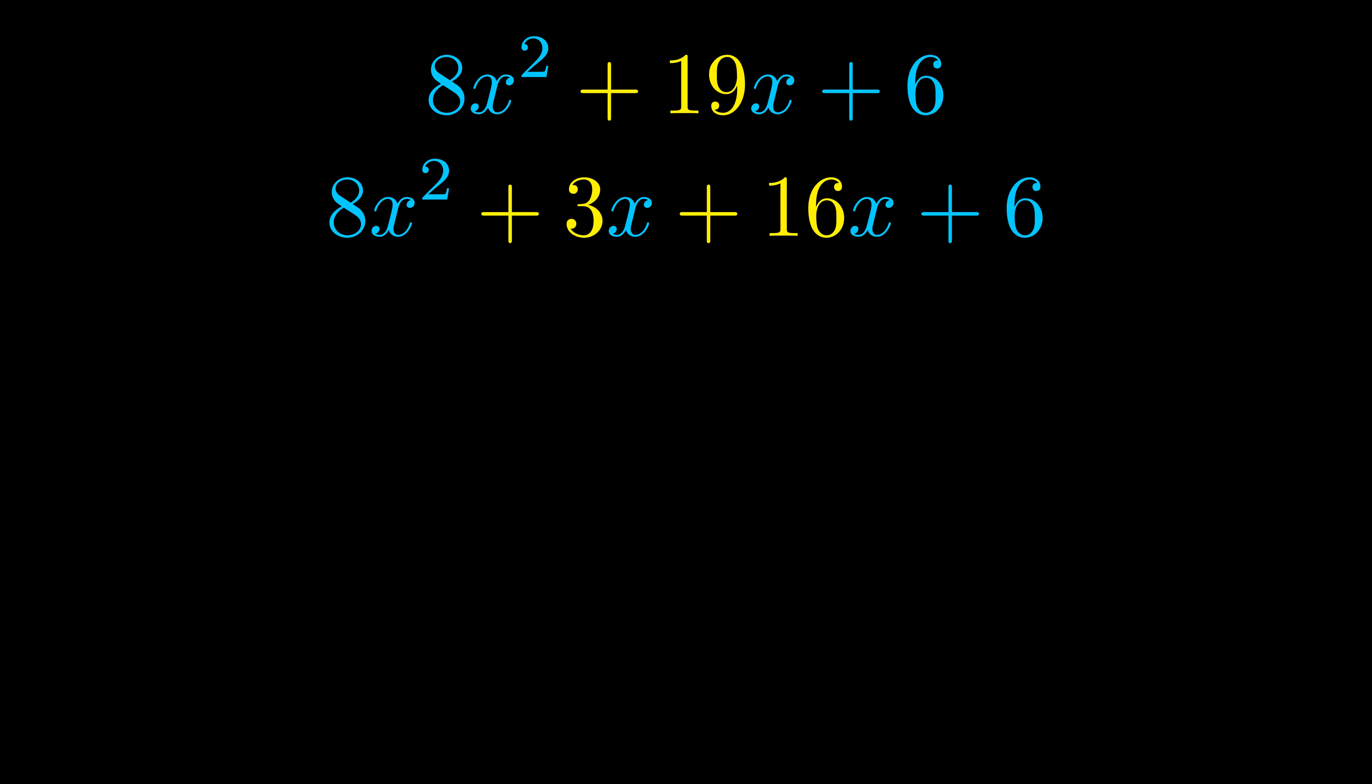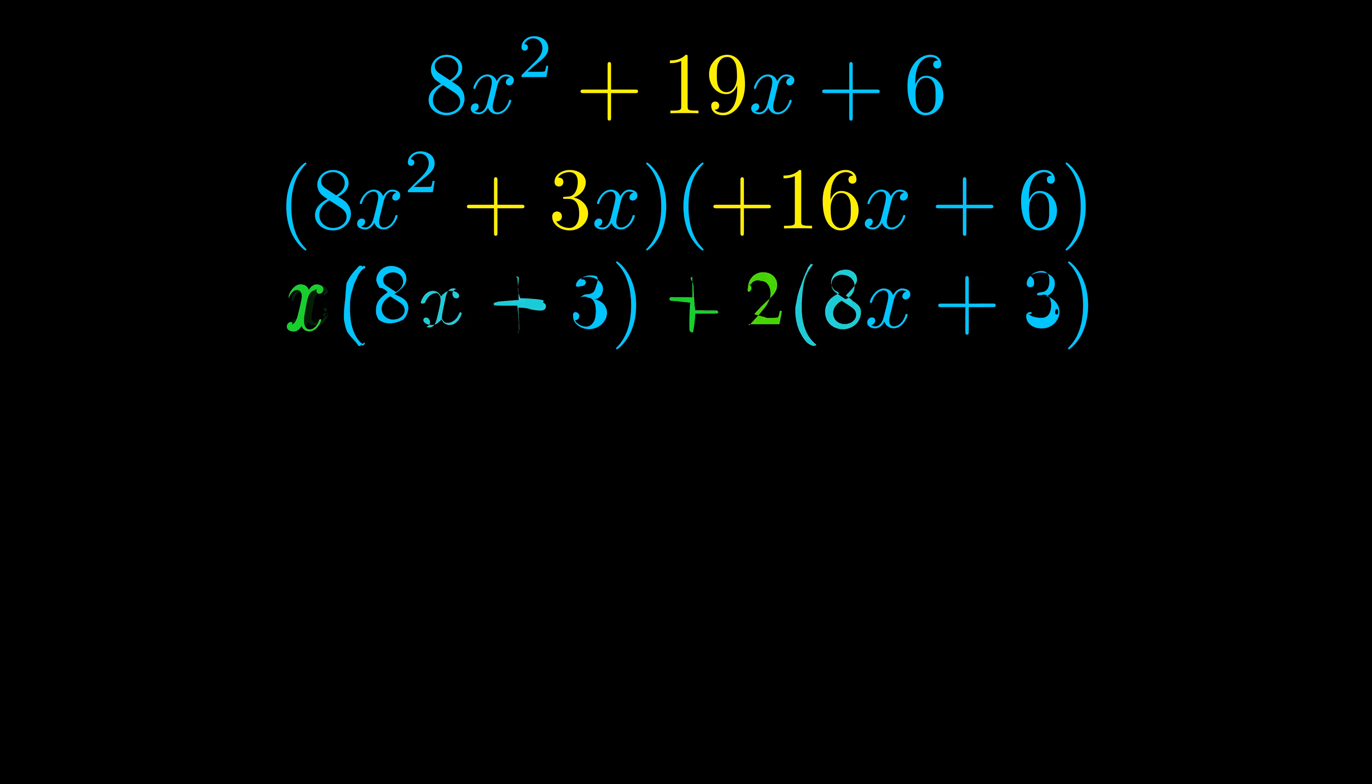Once we've done this we go ahead and put parentheses around the first term and the last term, and we do that so that we can take the greatest common factor out of both terms. We can see the greatest common factor is now outside in green.